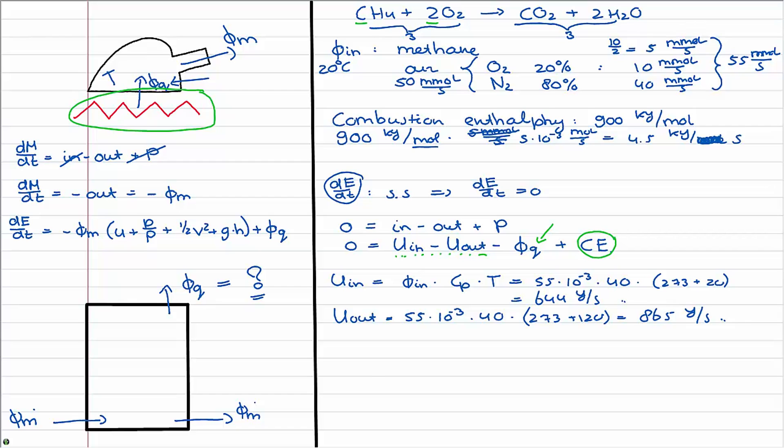So if I now want to calculate the VQ, the heat going into the stove, I will see that this is the combustion energy plus U in minus U out. And if I add up, I get 4279 joules per second.